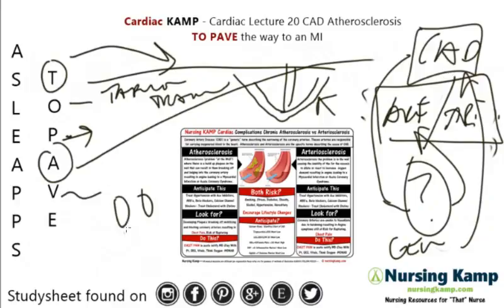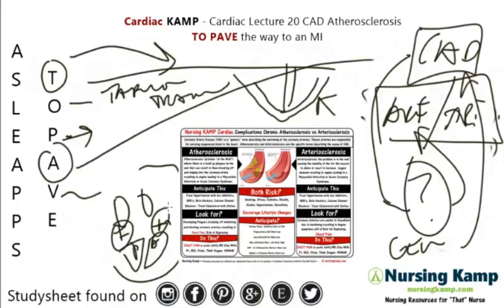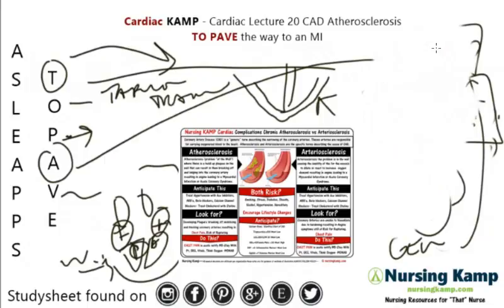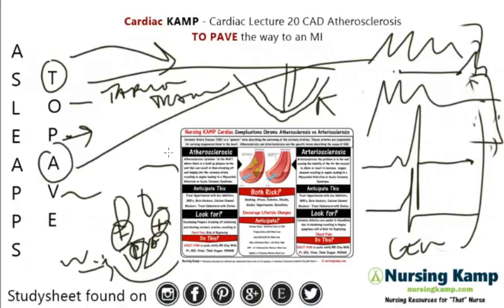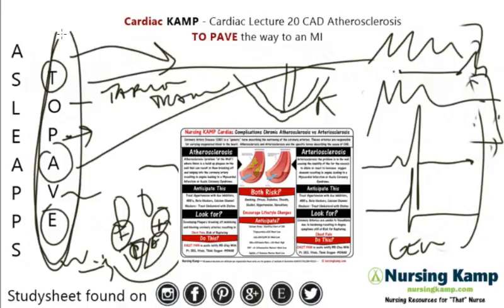The next thing is valves. In a previous lecture I talked about the valves — tricuspid, pulmonic, mitral, aorta. There's a problem actually in the valve, either a regurgitation, stenosis, or something like that. And then the last thing is electricity — a problem with the actual electrical system, whether it's A-fib, flutter, V-tach, or sinus issues. Whenever you're thinking about a heart question, it's usually focused on 'to pave the way,' and one of these reasons could result in an MI.